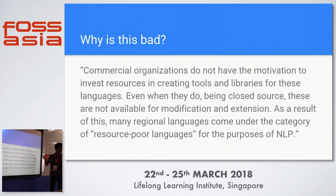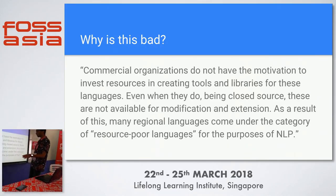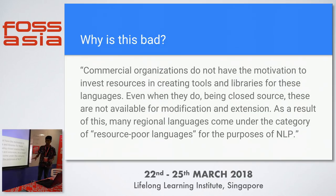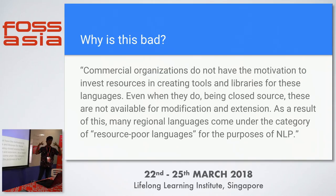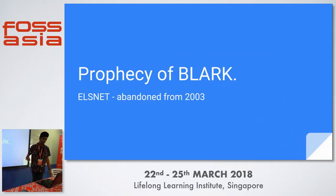Why is not having research, corpora, and tools bad? Commercial organizations don't have the motivation to build tools without these resources. Having them helps boost the economy. Grammarly was able to create their tool because English already had a lot of research and resources in that field. If a language doesn't have this, no commercial organization or developer can even think of ideas — they'd just be starting from scratch. Language support by commercial organizations basically boosts the economy.